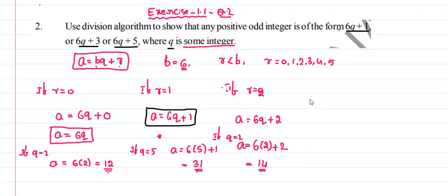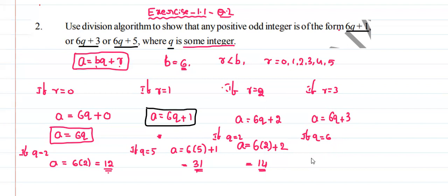If r is equal to 3, then a is equal to 6q plus 3. Taking q equals 6, a equals 6 into 6 plus 3, which is 36 plus 3 equals 39. This is an odd number, so 39 is of the form 6q plus 3.